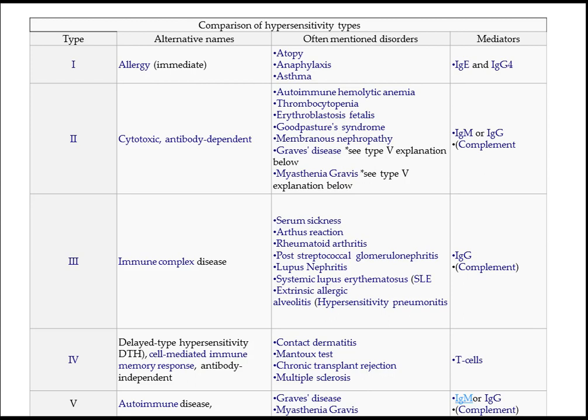Type 4 is the delayed type of hypersensitivity reaction — a cell-mediated immune memory response, and antibody-independent, whereas Type 2 is antibody-dependent. The examples are contact dermatitis, Mantoux test, chronic transplant rejection, and multiple sclerosis.